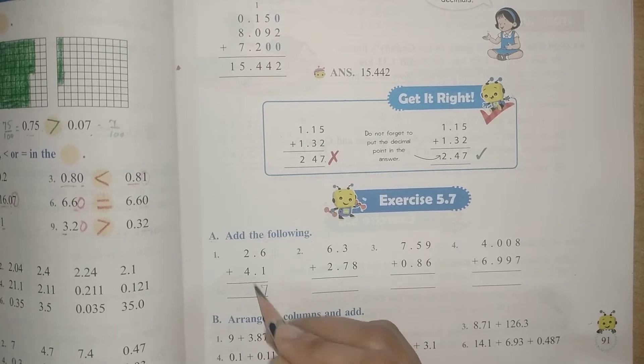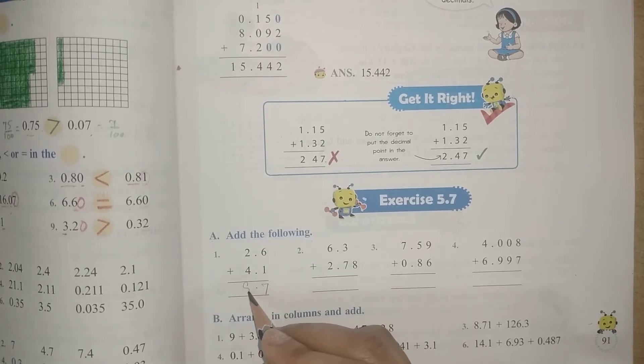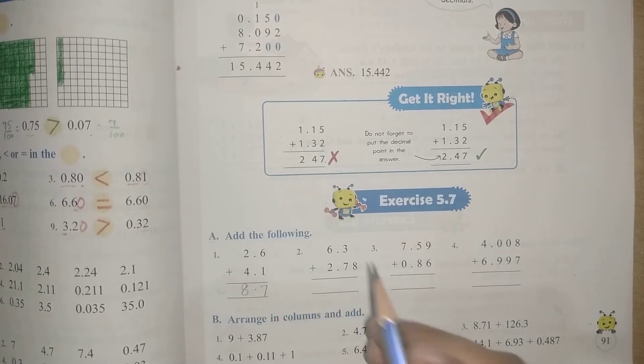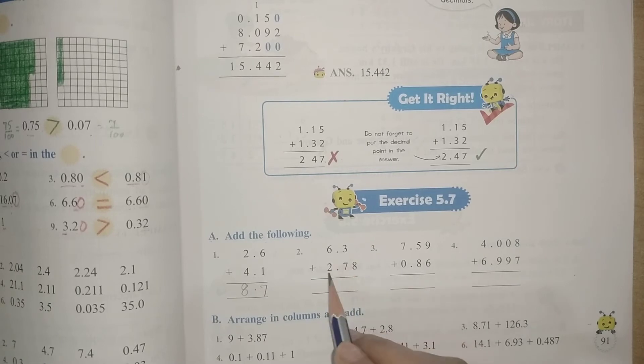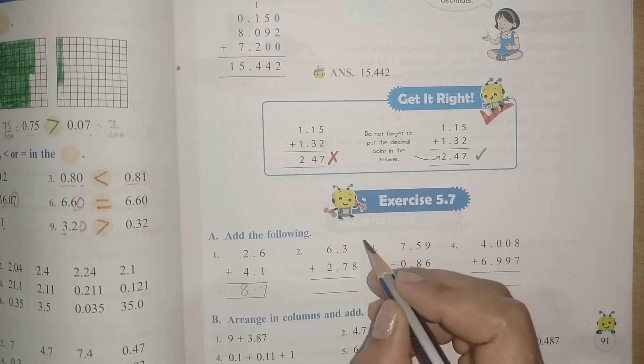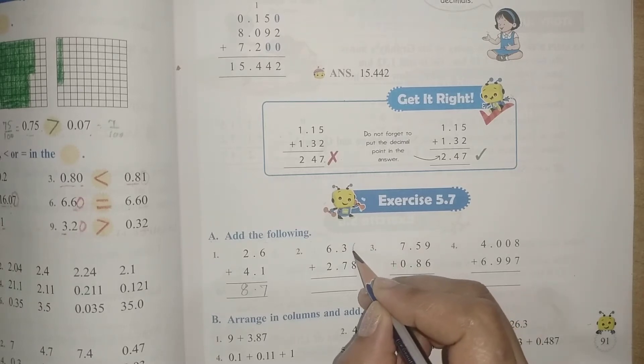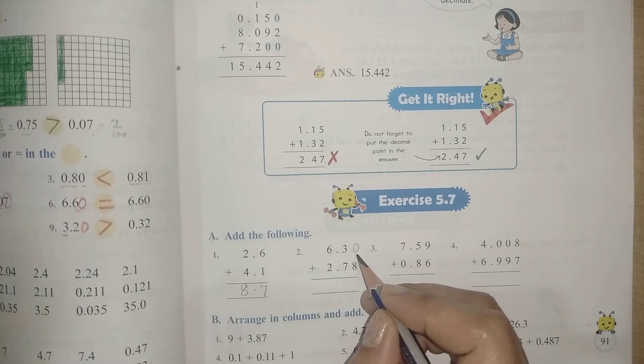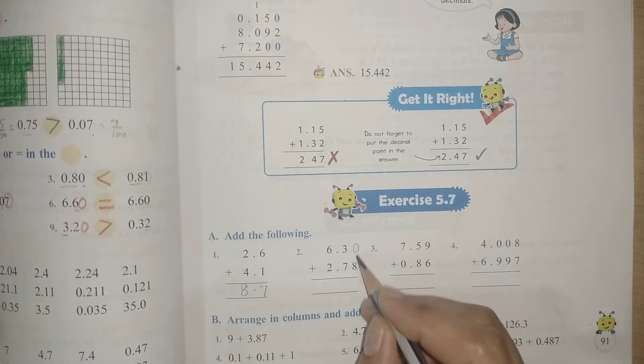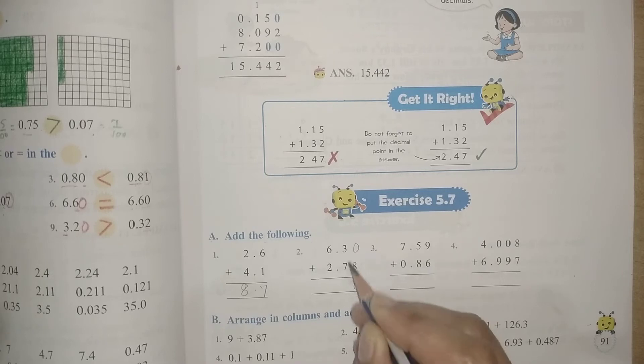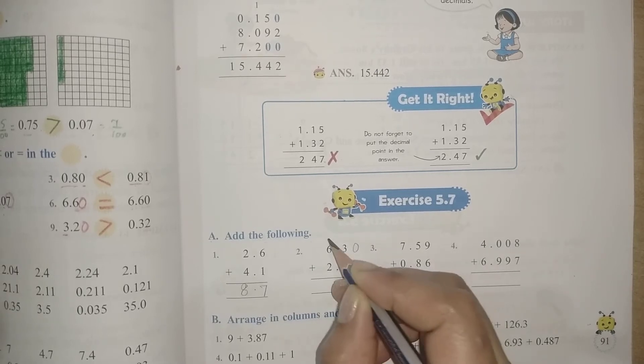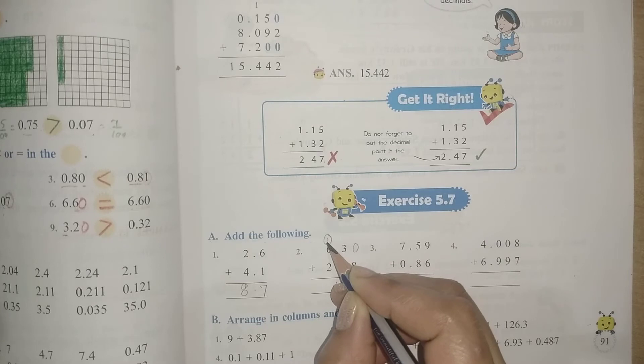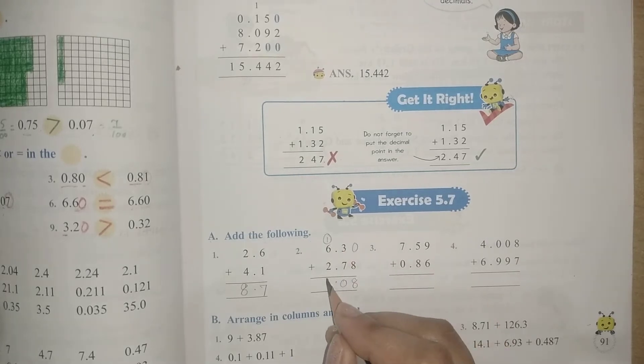Next it is 6.3 and 2.78. It is unlike decimals, so we will make it like decimals by adding 0 here. Now we will add it: 0 plus 8 is 8, then 3 plus 7 is 10, then point, 1 carry over will come here, then 1 plus 6 is 7, 7 plus 2 is 9. So 9.08.